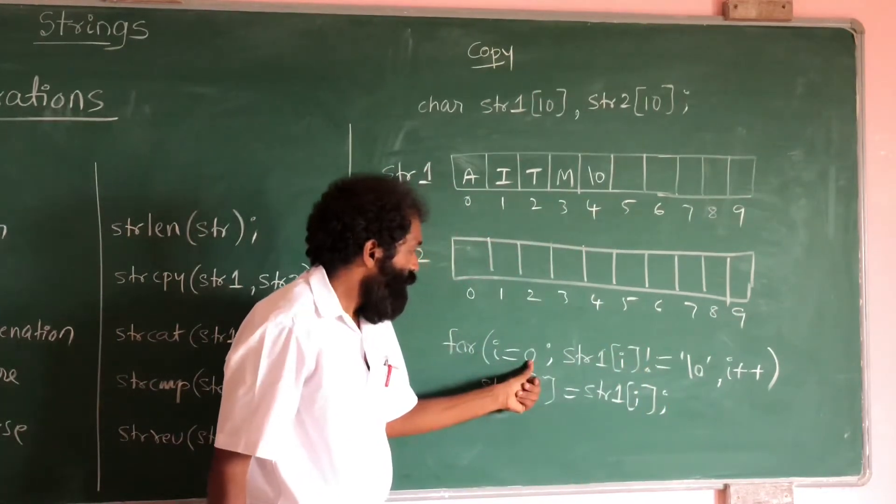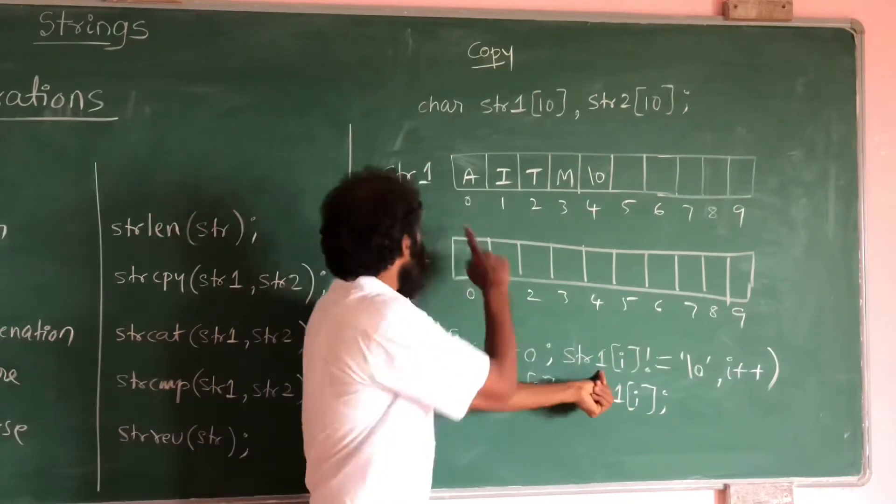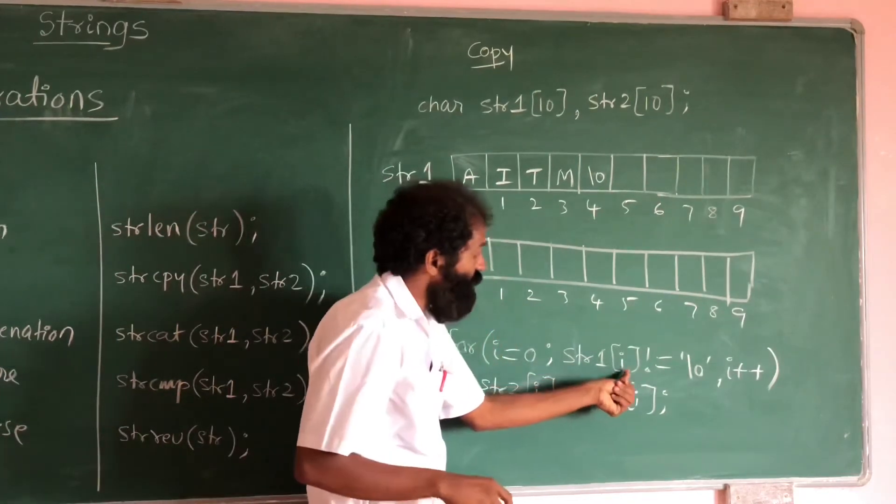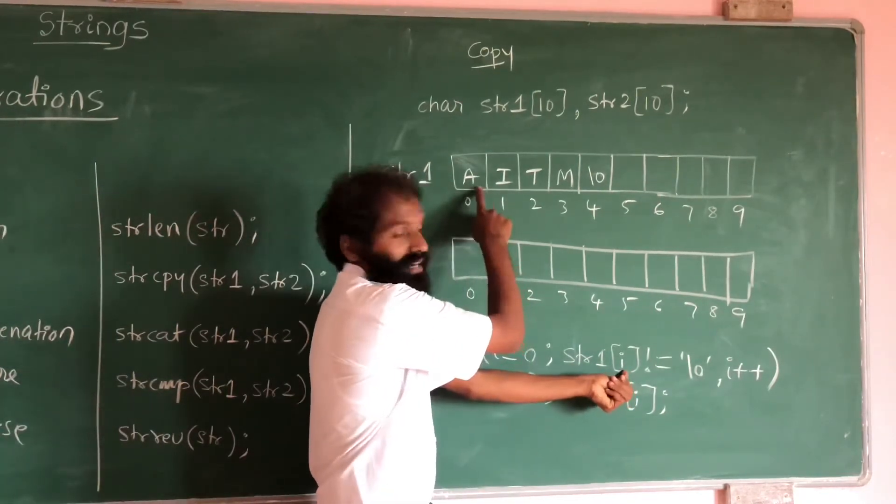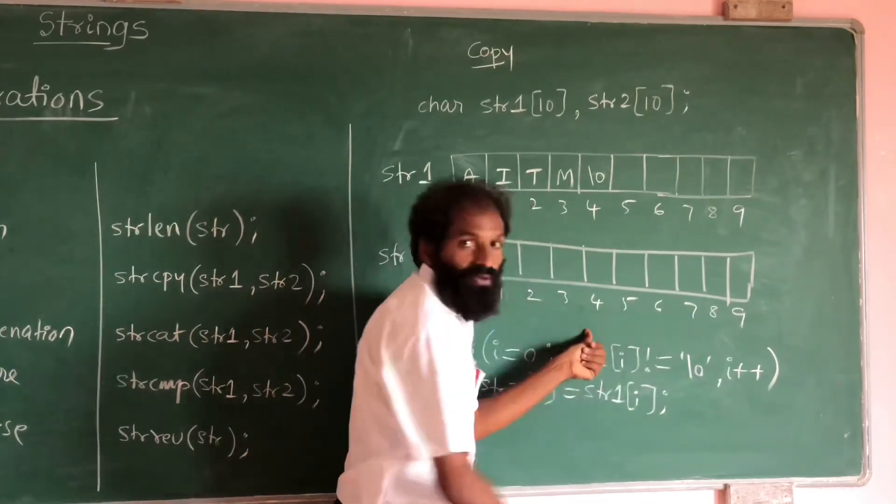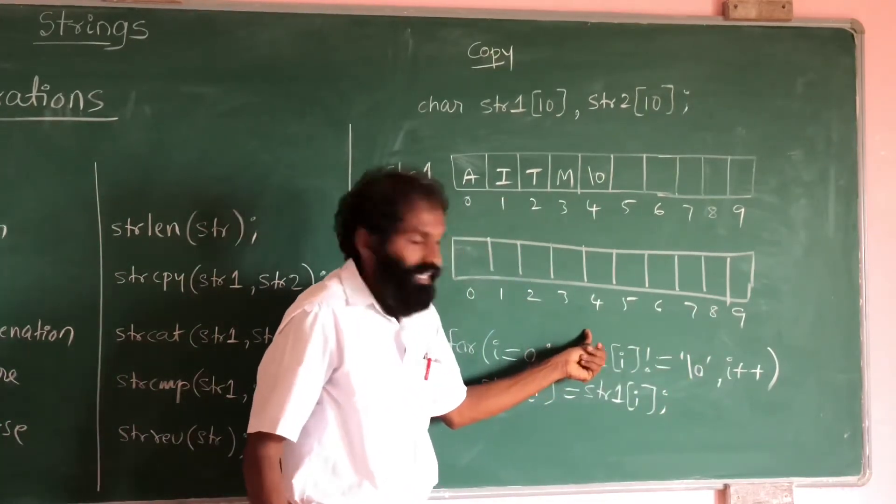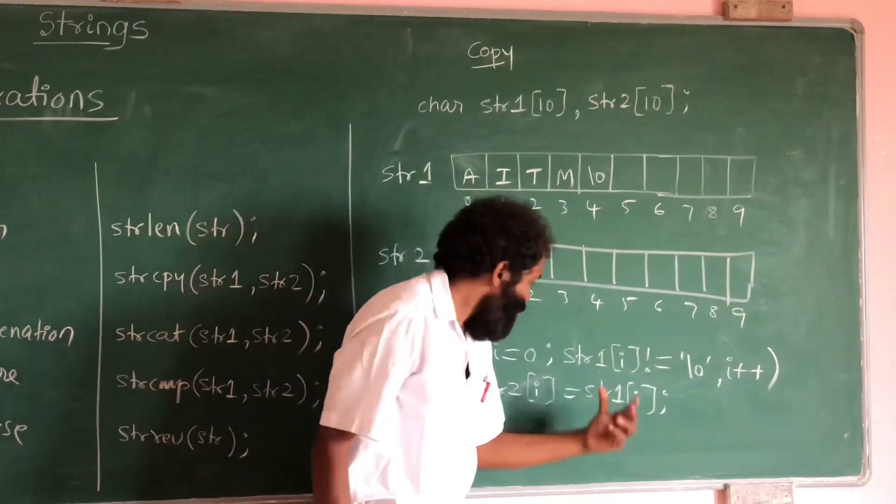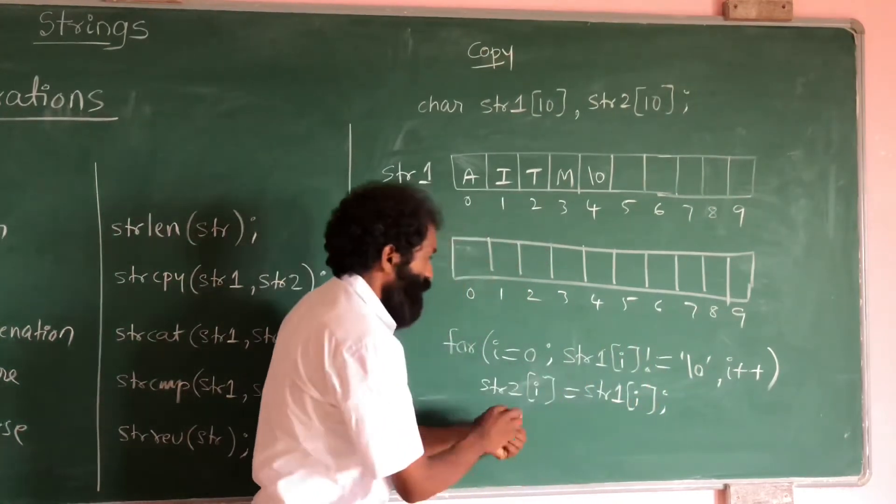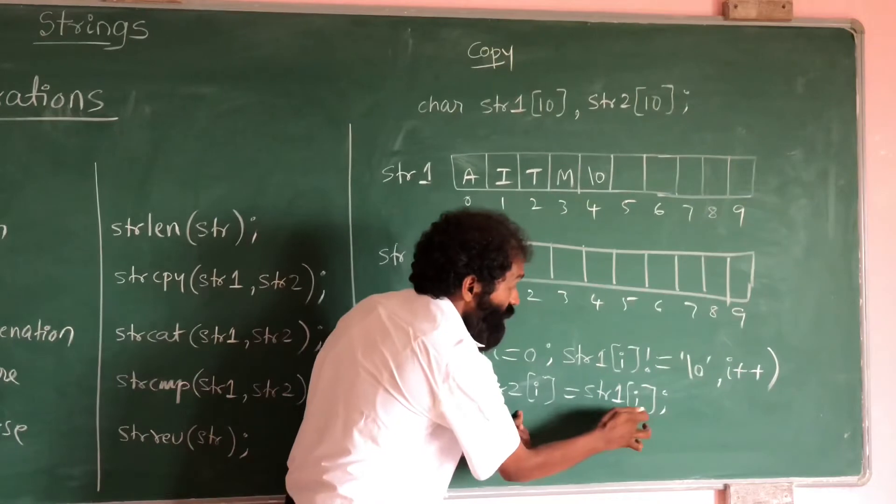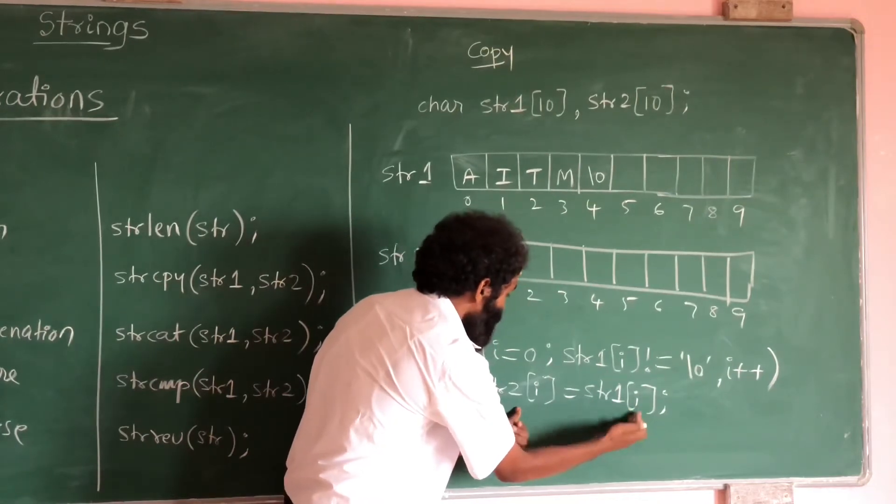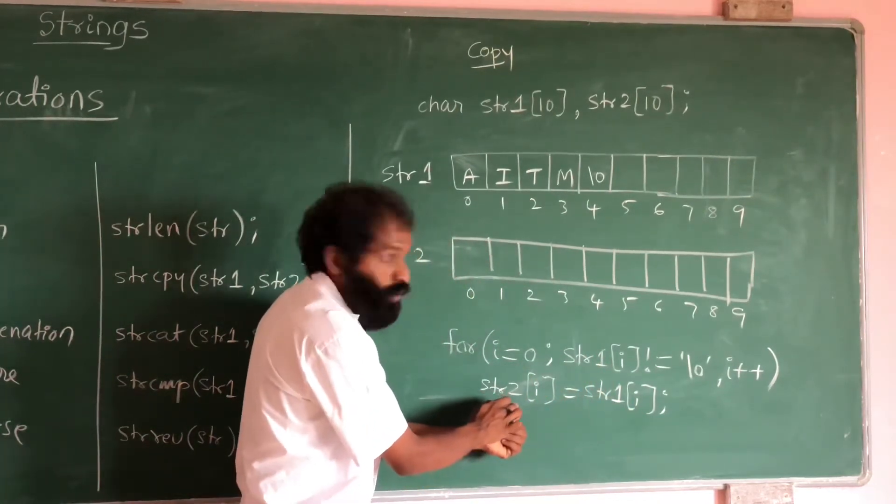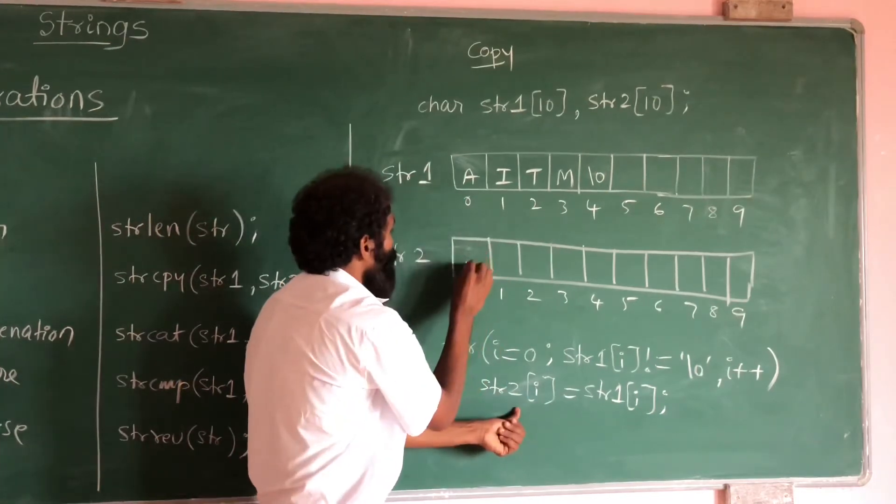I value 0, see string 1 of 0 is A. Right? String 1 of 0 means A. Is A equal to null? See, it is not equal to null. That is why we have to store that. String 1 of 0 means A. This A will be stored in string 2 of 0 means A will come here.